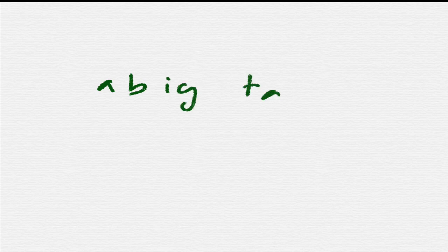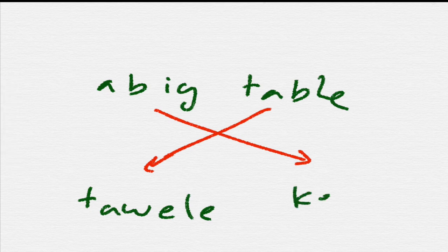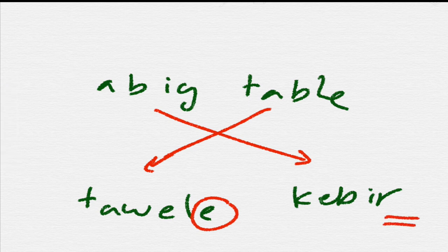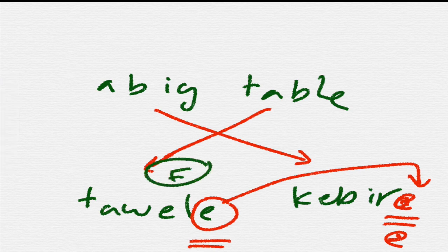Another example: 'a big table.' Again, we start with the noun followed by the adjective. Table is 'tawila' and the adjective is 'kabir.' Because the noun is feminine, you add the feminine ending to the adjective as well, making it 'kabira.' In Arabic, if the noun is feminine, the adjective must also be feminine.